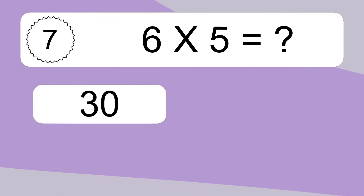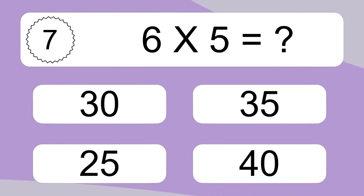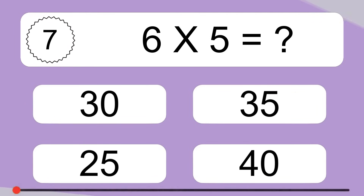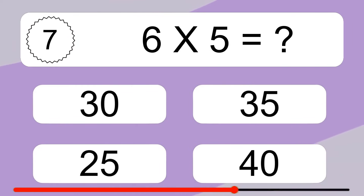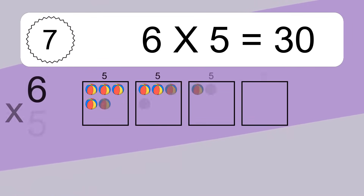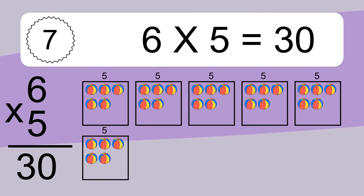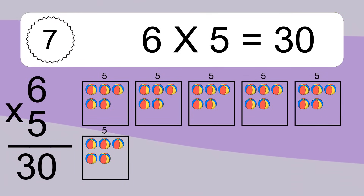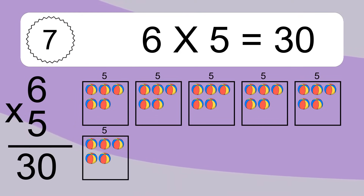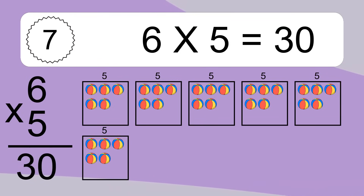6 times 5 equals what? 6 times 5 equals 30. We have 6 boxes and each box has 5 colorful balls inside. If you count all the balls in all the boxes together, you will have 6 times 5 balls. This equals 30 balls.